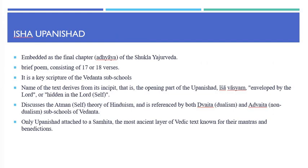The Isha Upanishad is embedded as the final chapter of the Shukla Yajurveda. It is a brief poem consisting of about 17 or 18 verses. It is a key scripture of the Vedanta sub-schools, and the name Isha is derived from its incipit — Isha Vasyam, meaning 'enveloped by the Lord' or 'hidden in the Lord or self.' The text discusses the Atman theory of Hinduism and is referenced by both Dvaitha (dualism) and Advaitha (non-dualism) sub-schools of Vedanta. Isha Upanishad is the only Upanishad attached to a Samhita, the most ancient layer of Vedic text known for their mantras and benedictions.